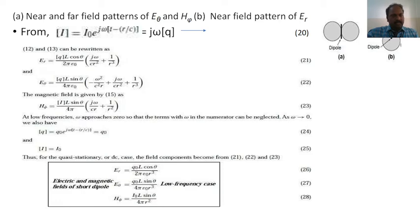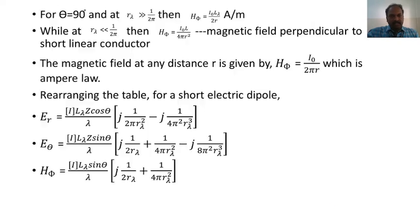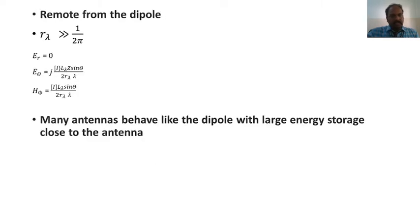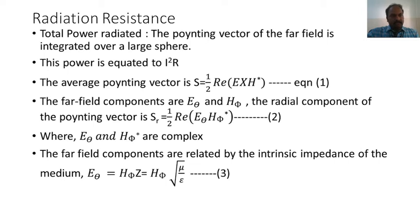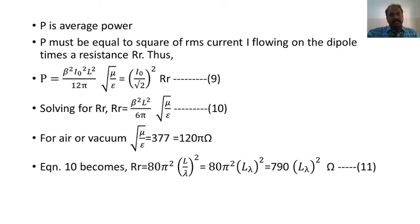After finding the field components for both conditions — near field and far field regions — the consolidated equations are given. By taking some assumptions, the finalized values of the field components can be stated. Then, by using those field components, the radiation resistance can be calculated from the average Poynting vector. From the average Poynting vector, by finding the total power radiated, the radiation resistance can be calculated. These are the equations which give the radiation resistance of the short dipole.